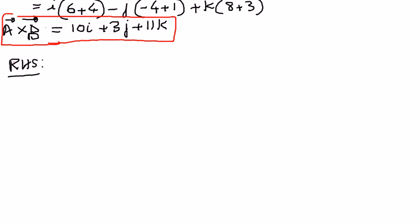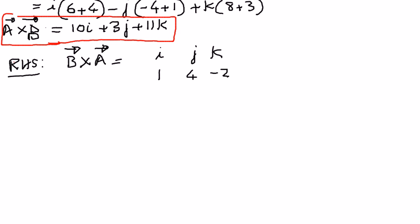The right-hand side of the equation: we're going to take vector b cross vector a, and the way to do that is as follows. We're going to write i, j, k, and the components of vector b — we write the coefficients: the coefficient of i is 1, coefficient of j is 4, and the coefficient of k is negative 2. And for vector a, the coefficient of i is 2, the coefficient of j is negative 3, and the coefficient of k is negative 1. If we find the determinant of this, that will give us the cross product between vector b and vector a.